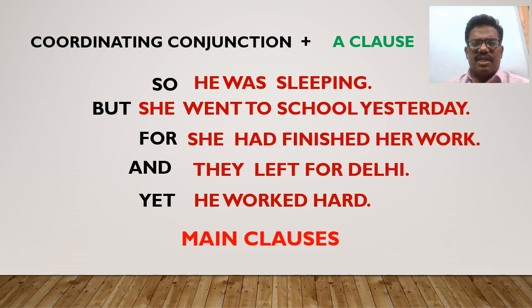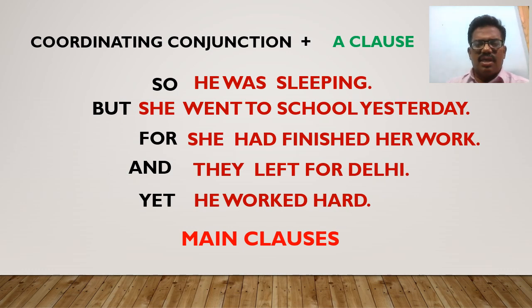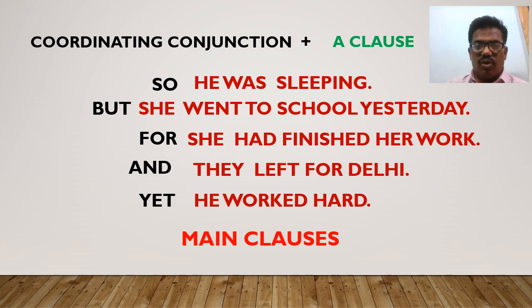See the difference: if we keep the subordinating conjunctions before the same clauses, the clauses will become subordinate clauses. But if we keep the coordinating conjunctions before the same clauses, all these clauses will be main clauses. This is how the clauses are affected by the conjunctions.